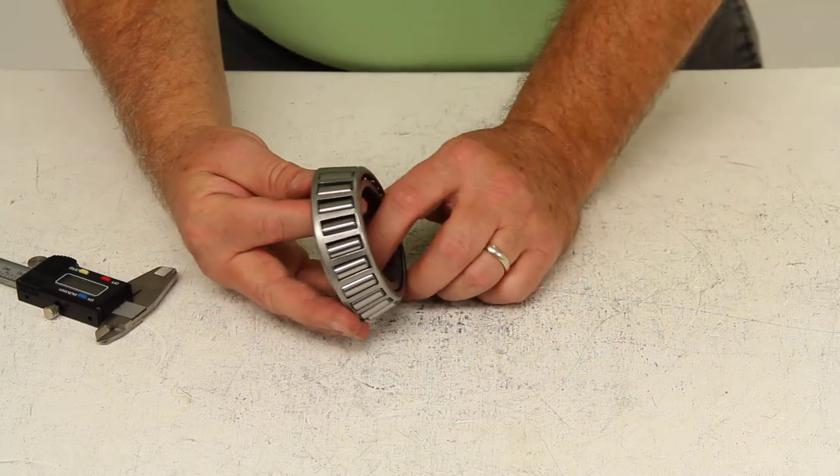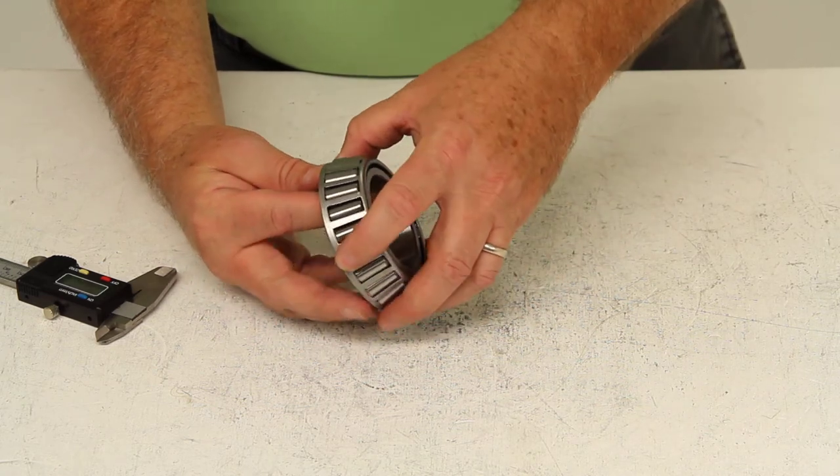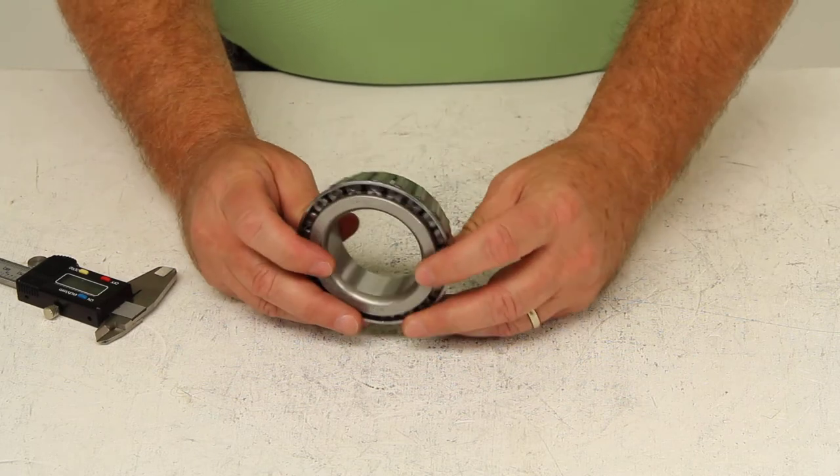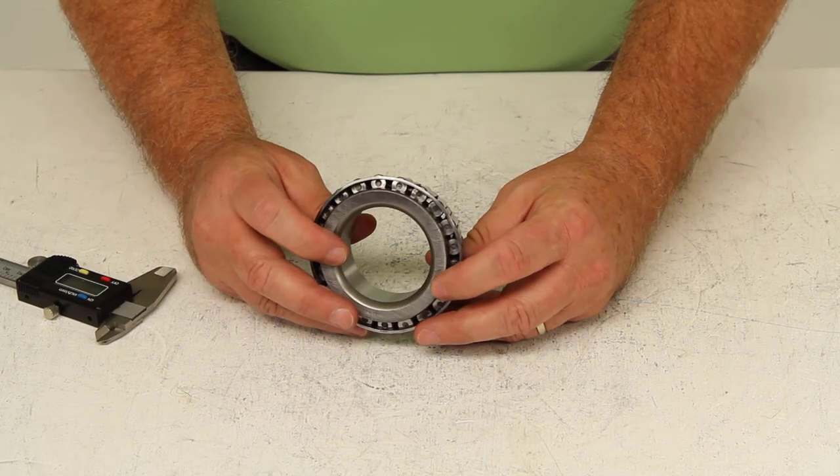That outer race is sold separately. It would be part number 28521, and the critical measurement on that outer race you would need to have would be the outer diameter, which would be 2.875 inches.